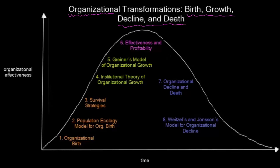As you can see, I have drawn this simple graph of organizational transformations, or organizational life cycle, you can call it. Basically, there is time on the horizontal axis and organizational effectiveness, or level of performance, on the vertical axis.